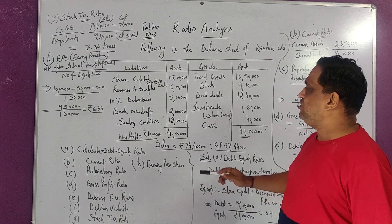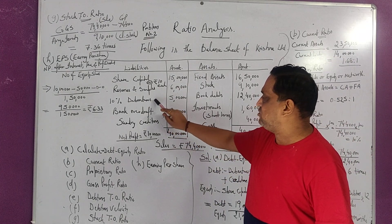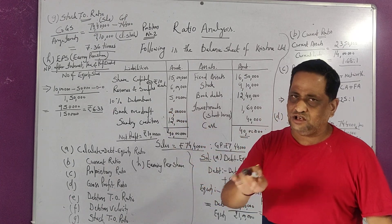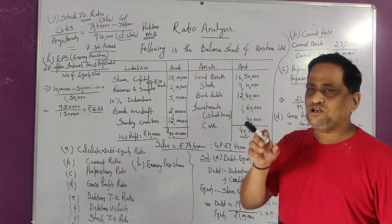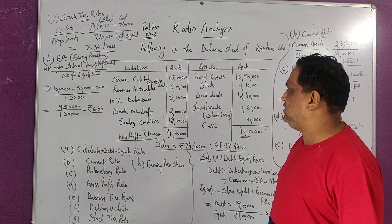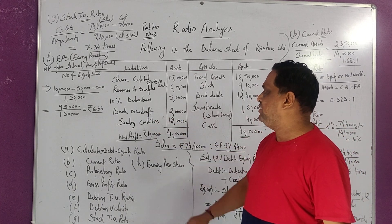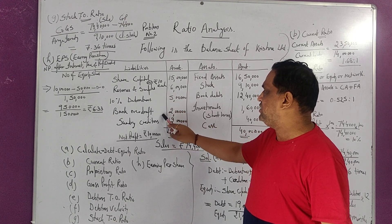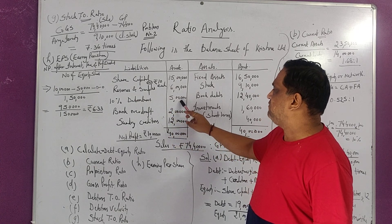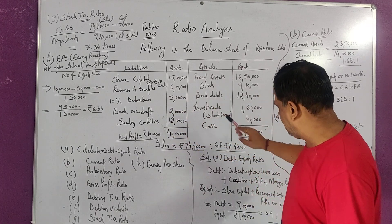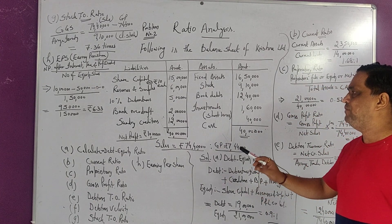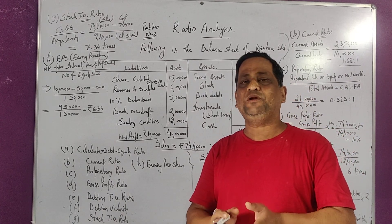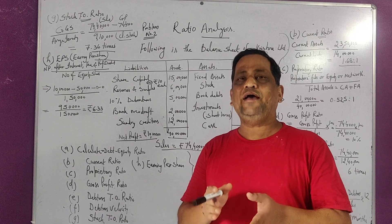Now in debt we have long-term loan — that is the debenture liability. Debenture is issued by the company as finance. Bank overdraft is a short-term liability. So combining long-term and short-term liabilities gives us the total debt. That means 5 lakh plus 2 lakh plus 12 lakh, which will be 19 lakh debt.